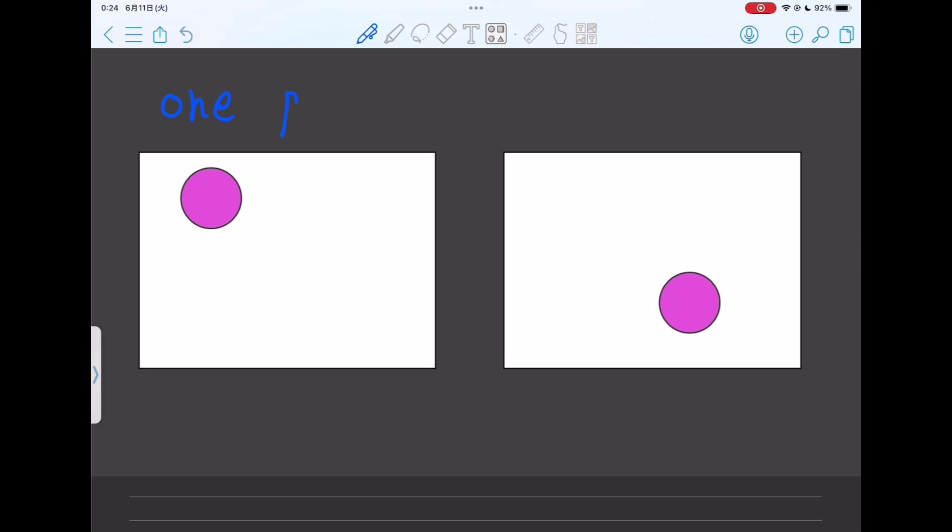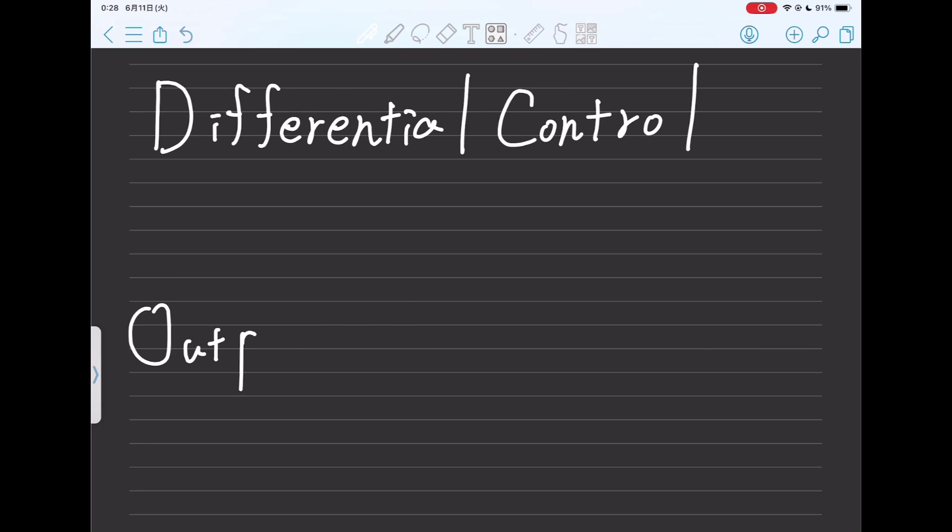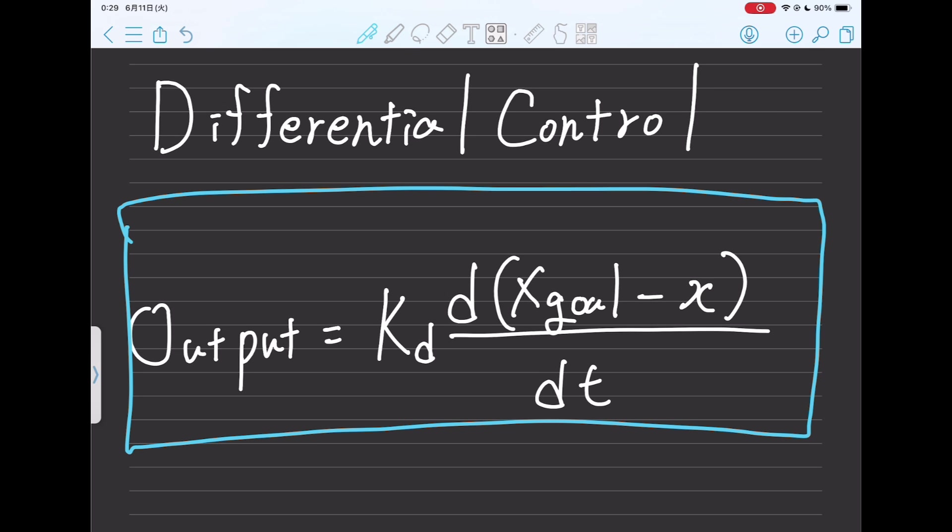If the left side image was acquired one step earlier and the right side image is now acquired, we can determine the ball's velocity by dividing the change in the coordinates by the time. This is called differential control. This can be called control based on the ball's velocity. However, this is still not enough.